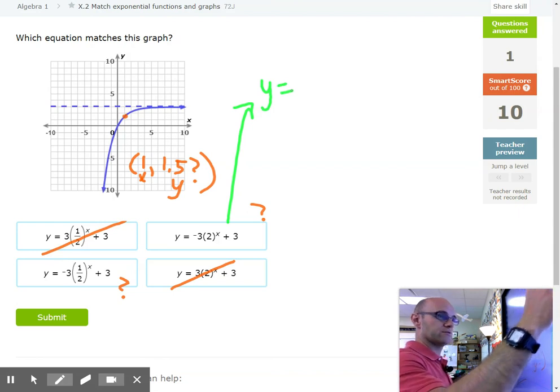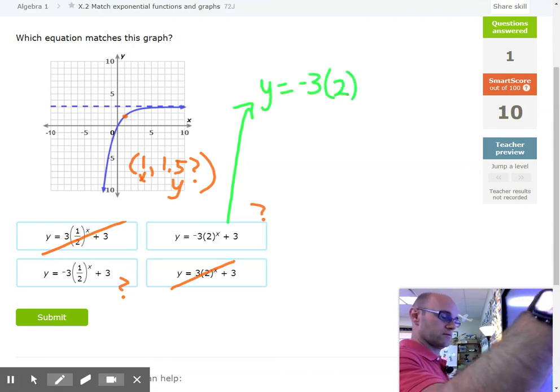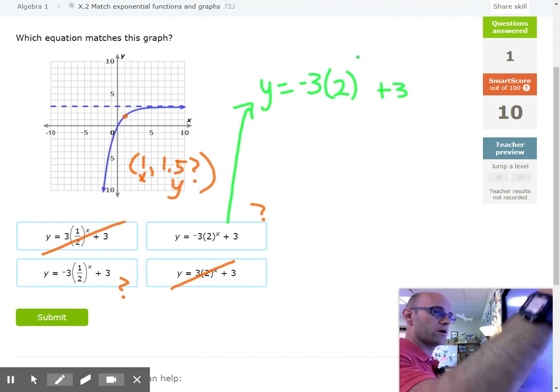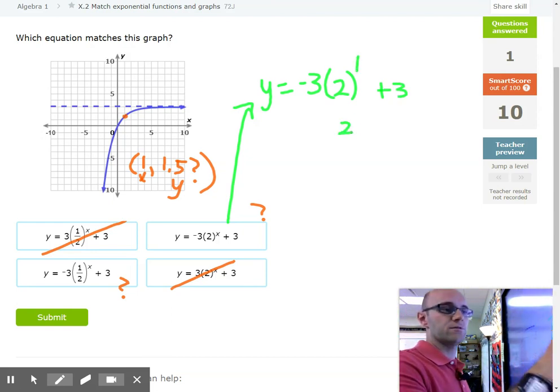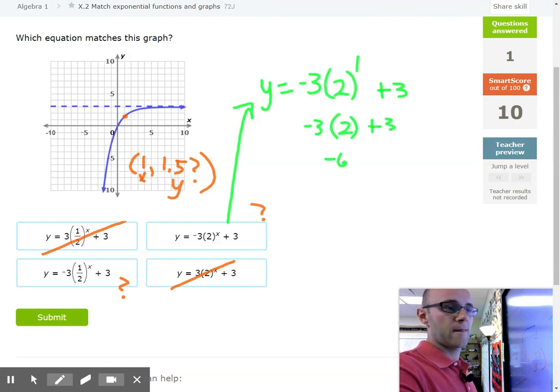So y is equal to negative 3 times 2 to the x plus 3. All right, we're going to plug in a 1. So we get 2 times 1 is 2. Negative 3 times 2 is negative 6. All right, it looks like we get about a negative 3. That doesn't sound right. We plugged in 1 and we got negative 3. Ironically, they have a point negative 1 comma negative 3. But for us, if we write it down, we needed the 0.1 comma 1 and a half. So this one does not look like the right one.